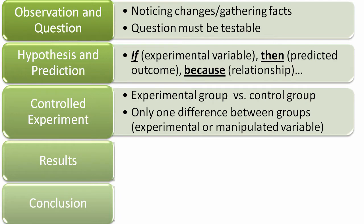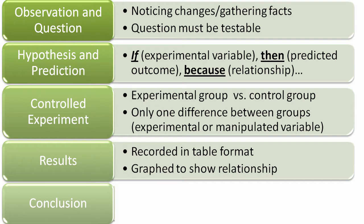The next part is the controlled experiment — we're actually going to test to see if those two things are related. This is what most people think of in terms of science: it's our experiment, our test. In our experiment, we're going to set up at least two groups. The experimental group versus the control group should be exactly the same in every way possible, with the only exception being an experimental variable, also called a manipulated variable. Then we're going to collect our results, often in the form of data — measurements recorded in an organized table and graphed to show the relationship between these variables.